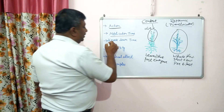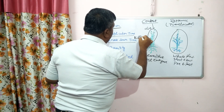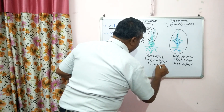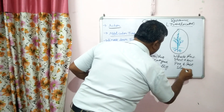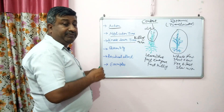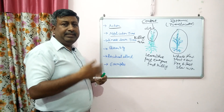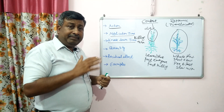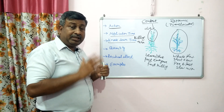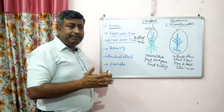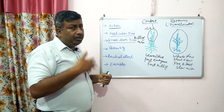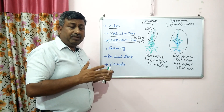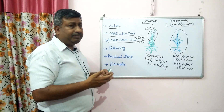Knockdown time refers to how fast the killing action is. In the case of contact herbicide, it is very fast — they immediately kill the weeds, within 24 hours. In the case of systemic herbicide, the action is slow — it takes two, three, or four days depending on climatic and weather conditions and plant stage. This is the advantage of contact herbicide: if you want to remove weeds quickly from the field, contact herbicides are a very good option.